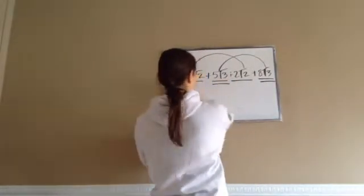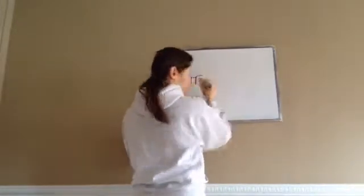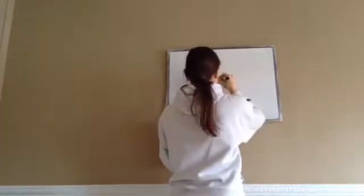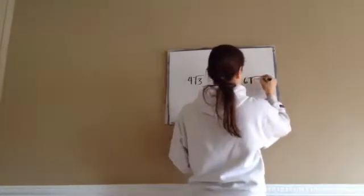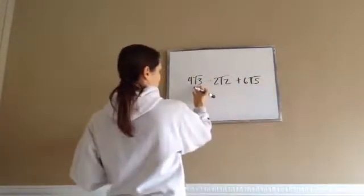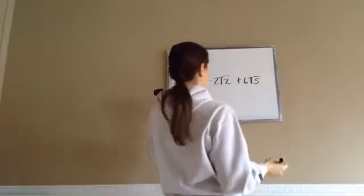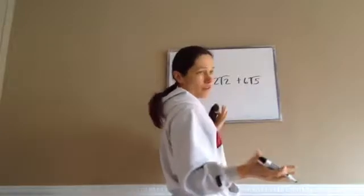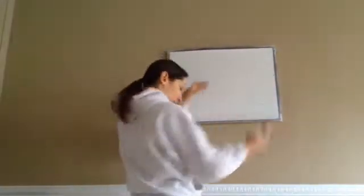Sometimes you're going to get a problem like this, but don't let it freak you out: 4 square root of 3 minus 2 square root of 2 plus 6 square root of 5. Square root of 3, square root of 2, square root of 5 — there's nothing you can do. So this would actually be no further simplification is possible, and you would just leave it.